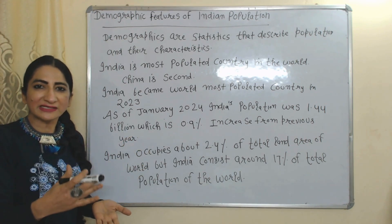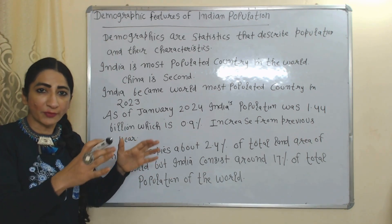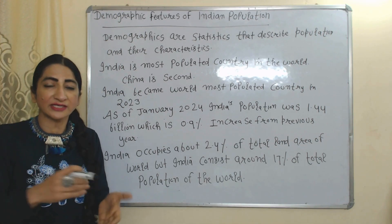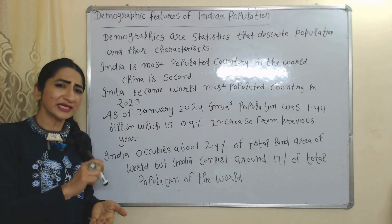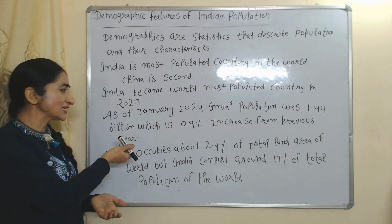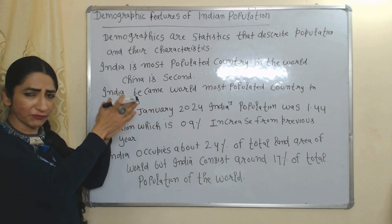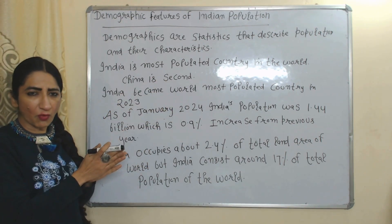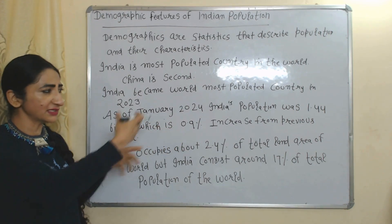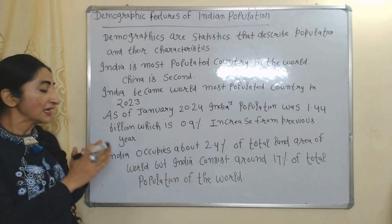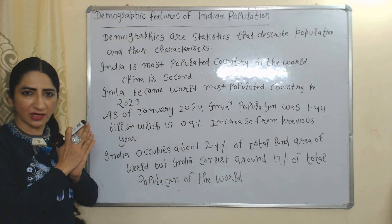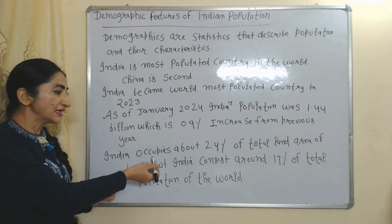India is the most populated country in the world and China is second. India became the world's most populated country in 2023. As per January 2024, India's population was 1.44 billion, which is a 0.9% increase from the previous year. India occupies about 2.4% of total land area of the world.